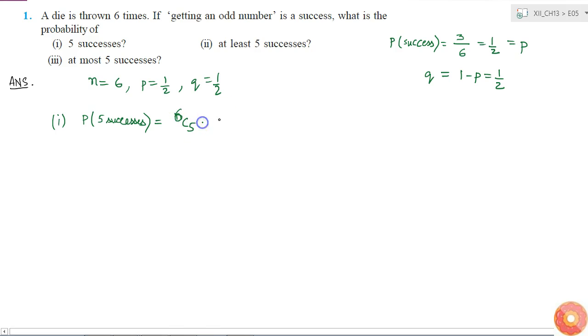6C5 × P^5 × Q^(6-5). Because P equals Q, I can simply write it as 6C5 × (1/2)^6. This equals 6C5, which is 6!/(5!×1!), times 1/2^6. This gives 6/64, which is the answer to the first part.